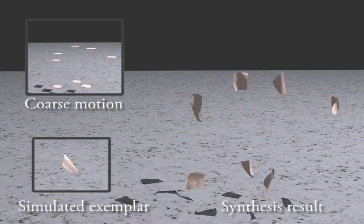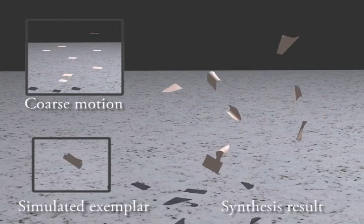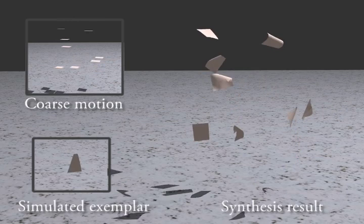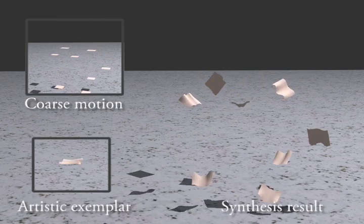Our method also works with 2D sheets. Here we use different input exemplars to achieve different effects of paper scraps. The first input exemplar is obtained via physically based simulation for realistic deformation, while the second one is manually animated for artistic flapping motion.